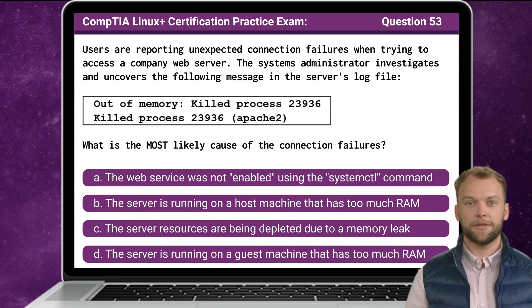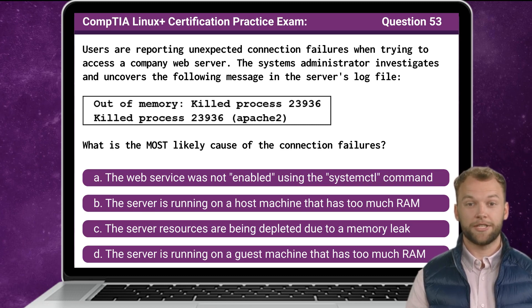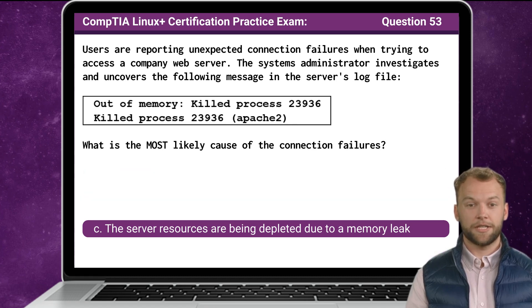Question 53. Users are reporting unexpected connection failures when trying to access a company web server. The system administrator investigates and uncovers the following message in the server's log file: 'Out of memory: Killed process 3936, Apache2.' What is the most likely cause of the connection failures? The answer is C: the server resources are being depleted due to a memory leak.